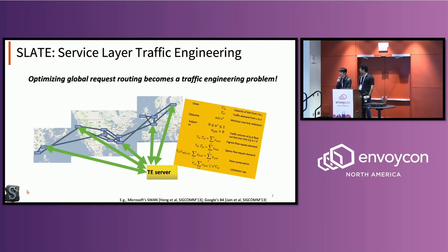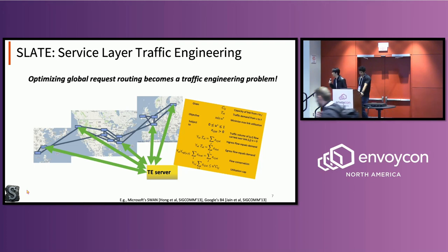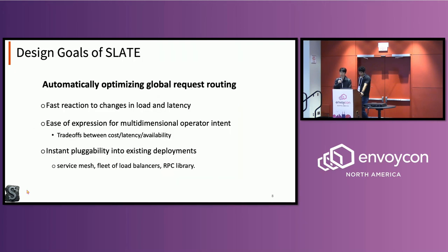Our project, SLATE — Service Layer Traffic Engineering — is inspired by network traffic engineering, which refers to the optimization of routing to improve throughput, load balancing, or latency of different classes of traffic. We are lifting this concept from the network layer, L3, to the service layer to solve the request routing problem. Our design goals: react to changes in load and latency fast, make it easy to express different operator intents like cost, availability, or latency, and achieve instant pluggability into existing deployments.